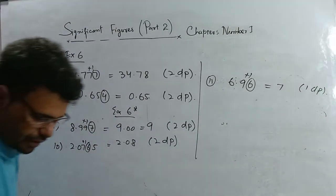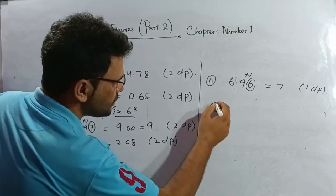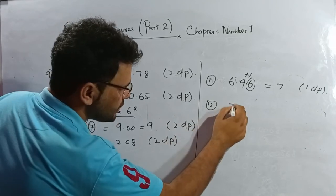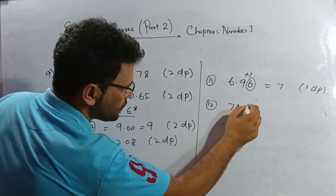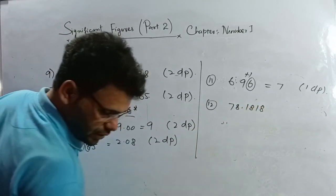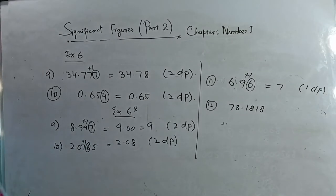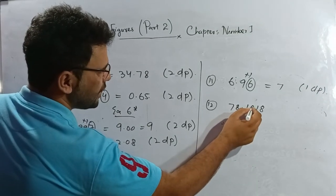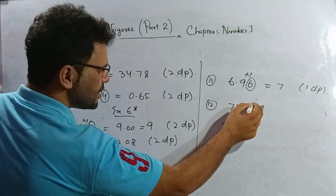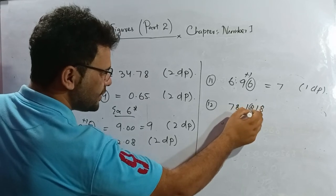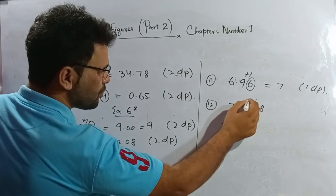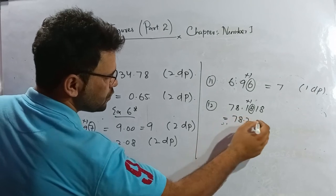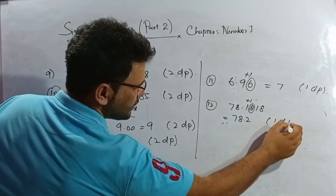Question twelve: 78.1818, write correct to one decimal place. One decimal place is the first digit after the decimal — that is 1. The second decimal place is 8, which is greater than five. So I add one. The answer is 78.2, one decimal place.